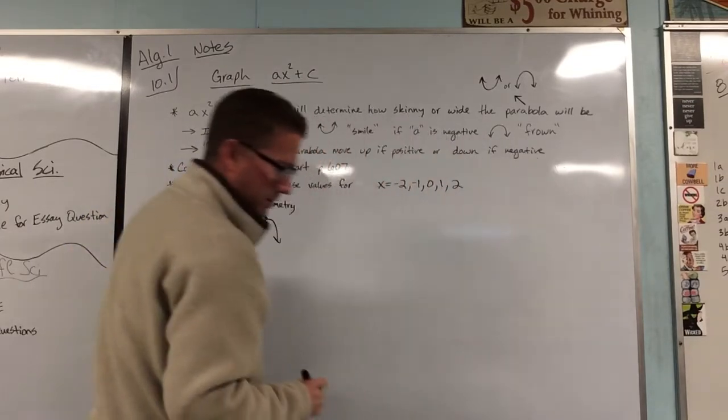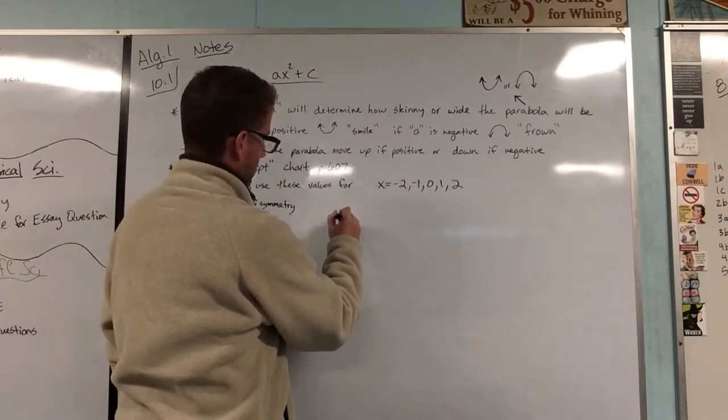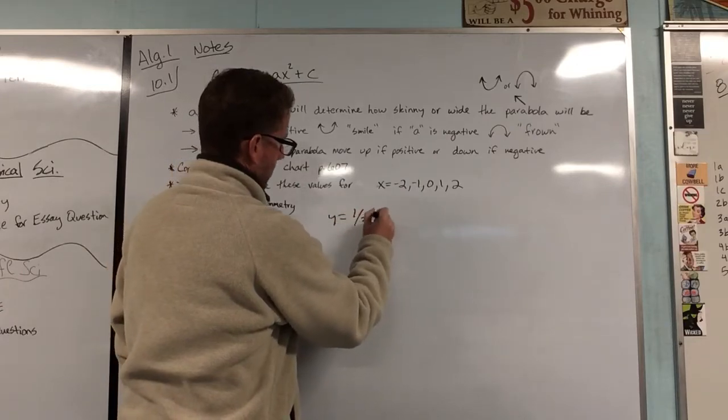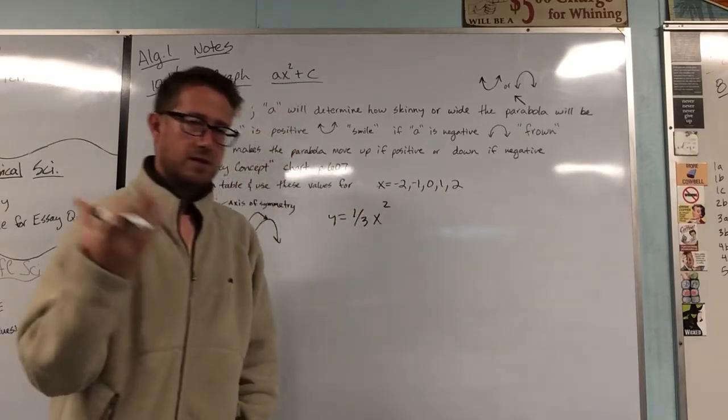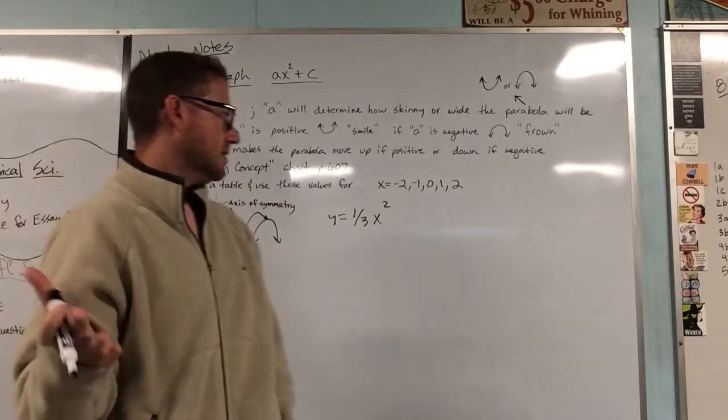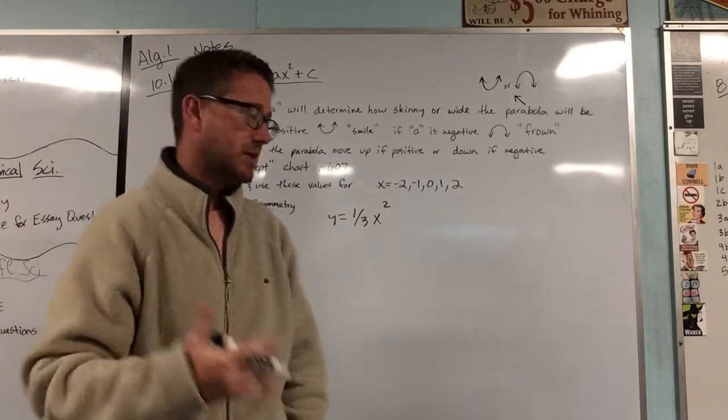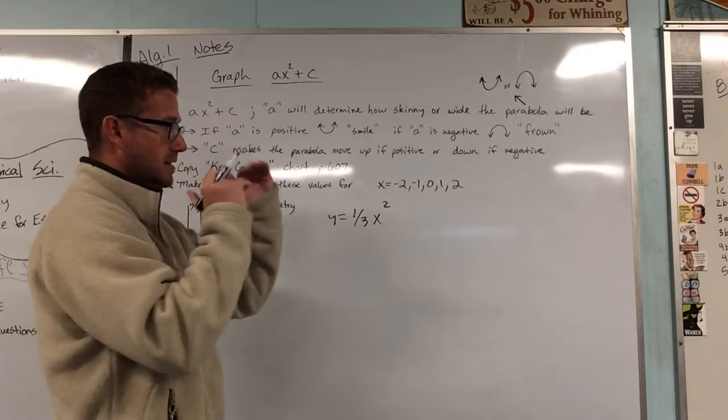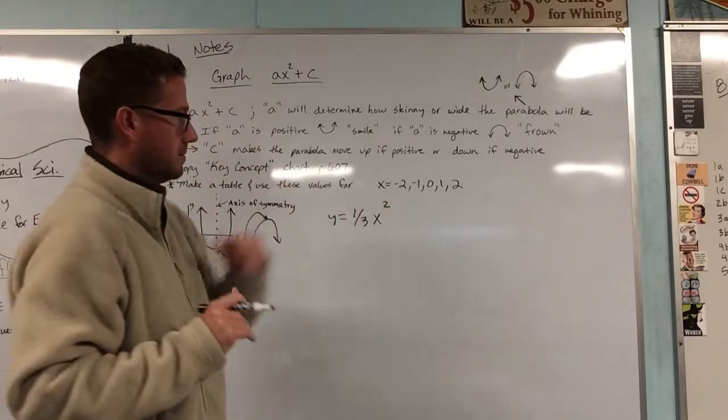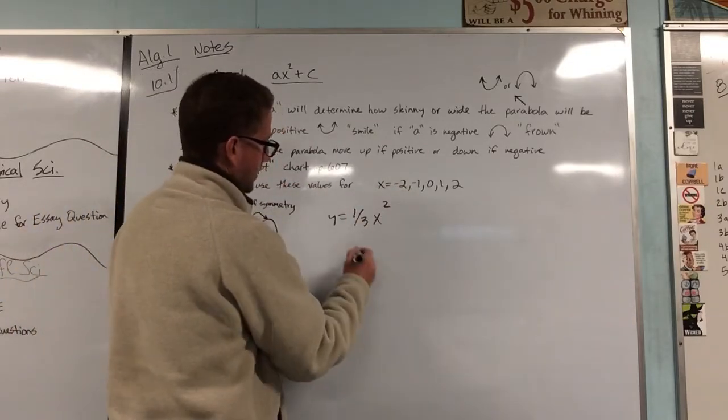All right, number 2, we have 1/3 x squared. Now a lot of you guys don't like fractions. Some of you don't like decimals. You're still got to think top times the top, bottom times the bottom. So let's plug in our values.